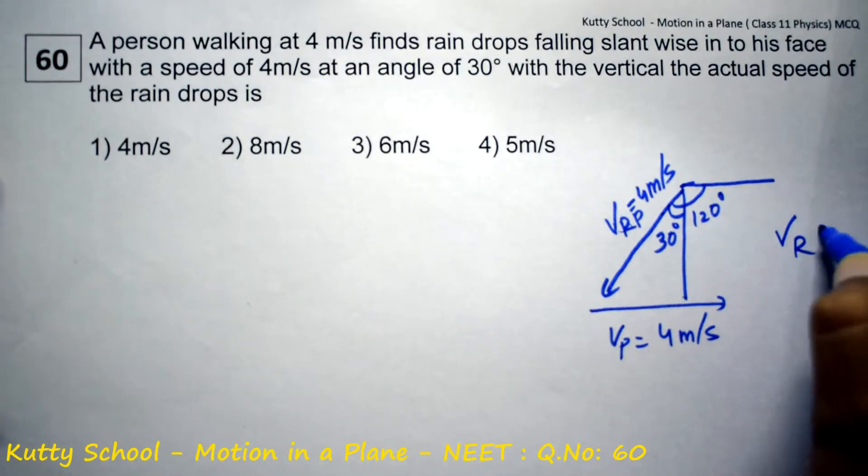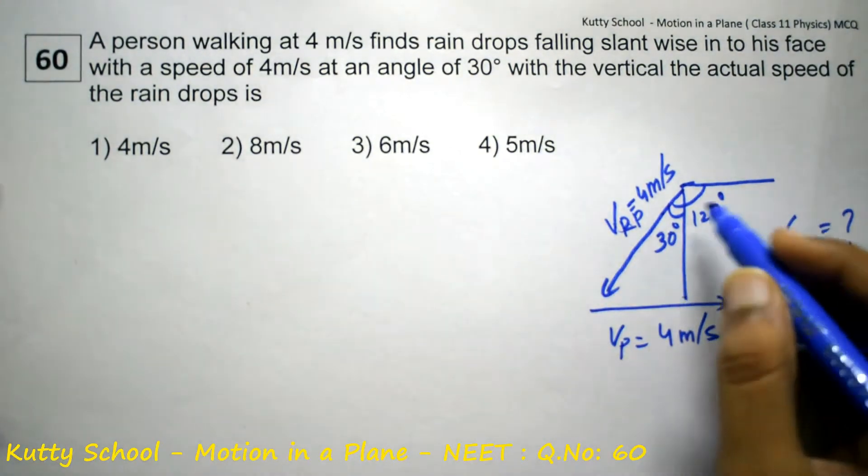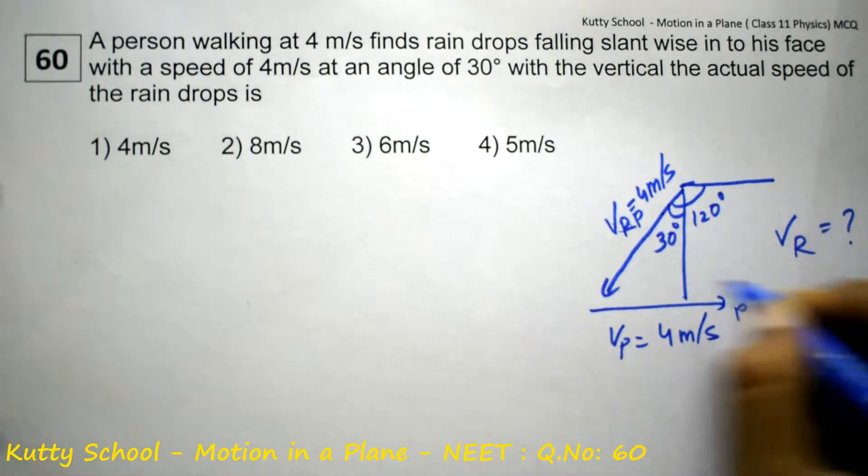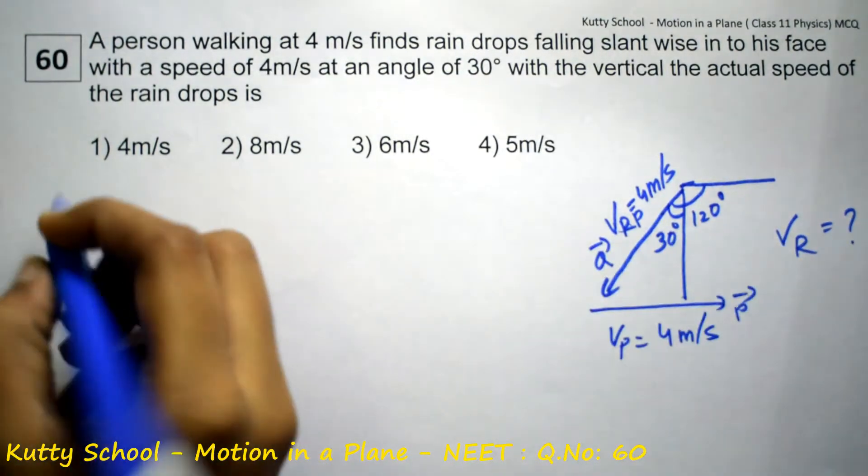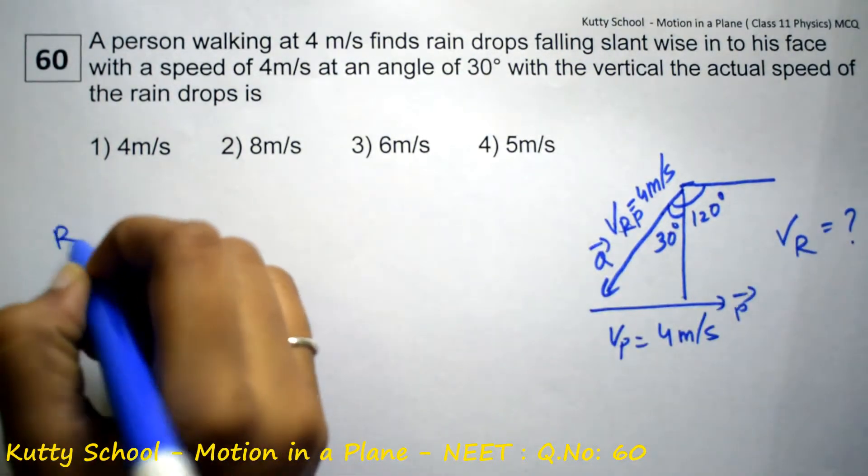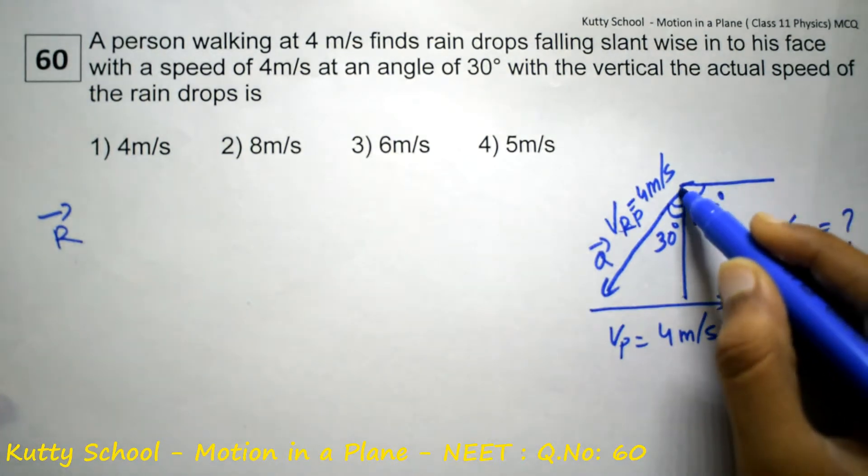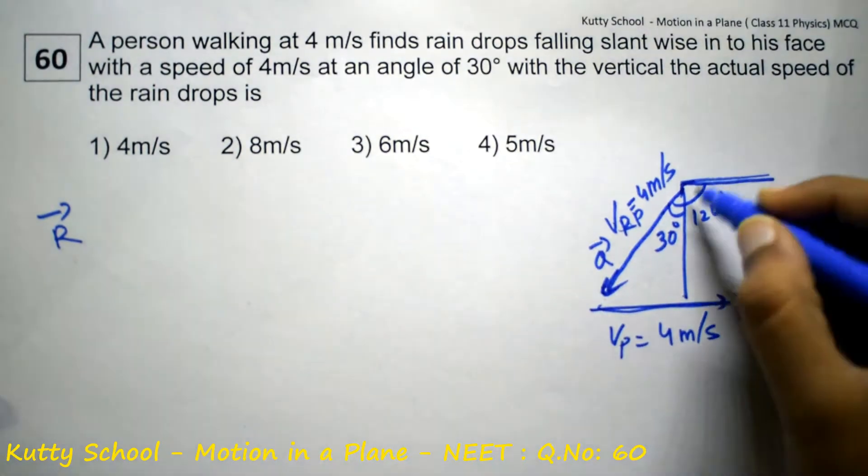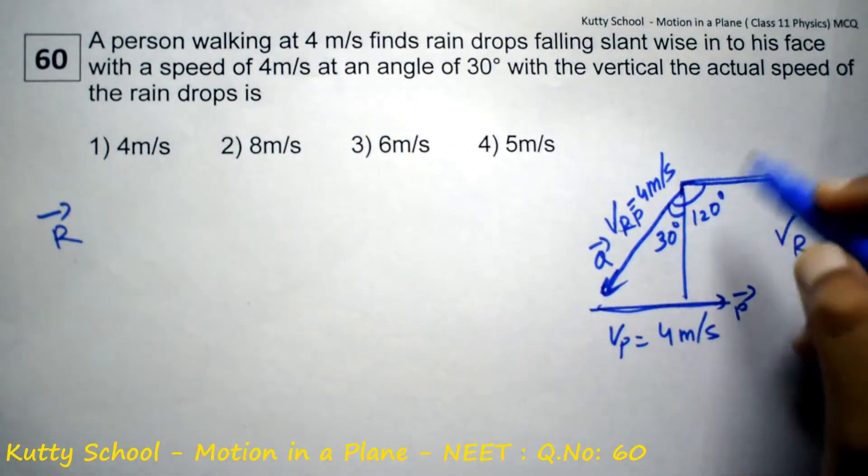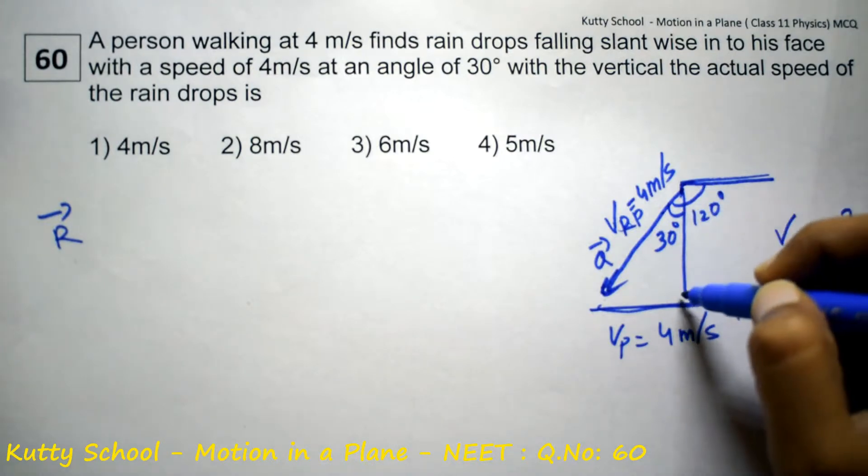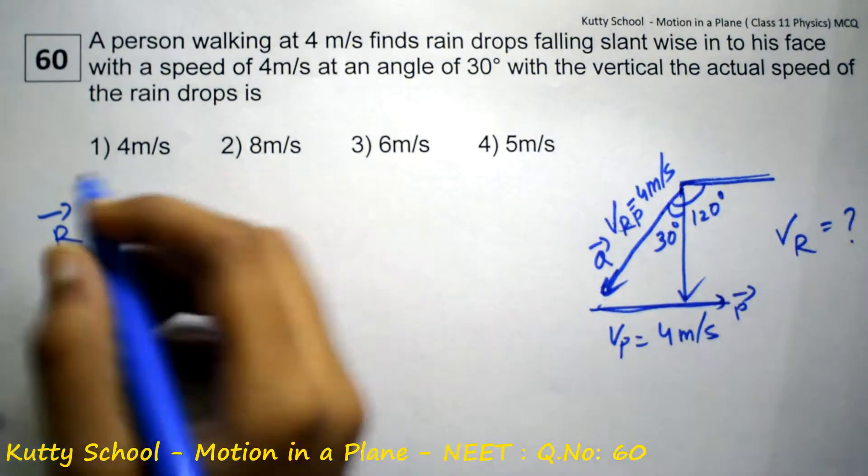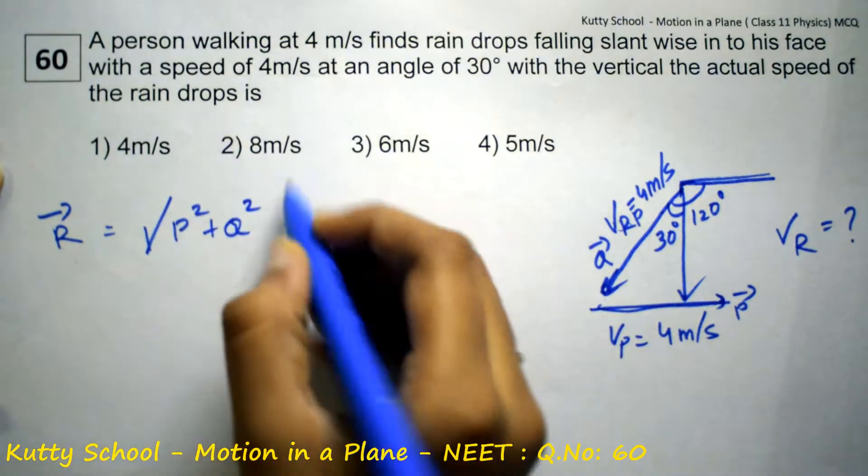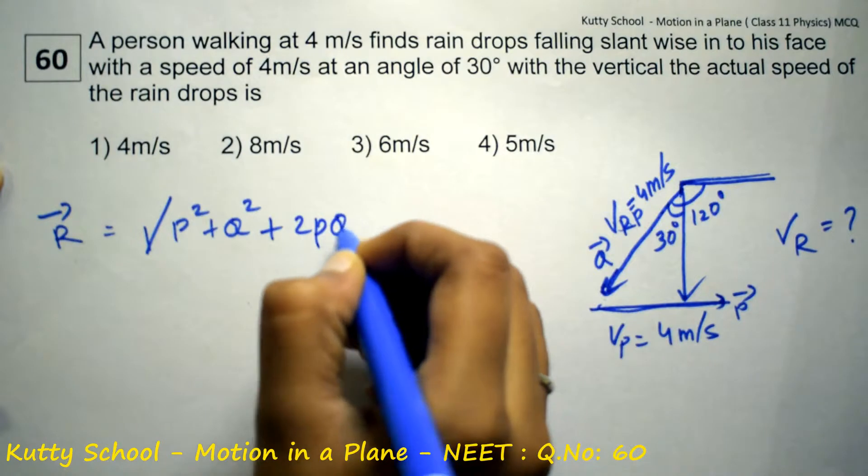We have the vector formula. It is p bar and q bar. The resultant vector, r bar, by triangle law is equal to root of p square plus q square plus 2pq cos theta.